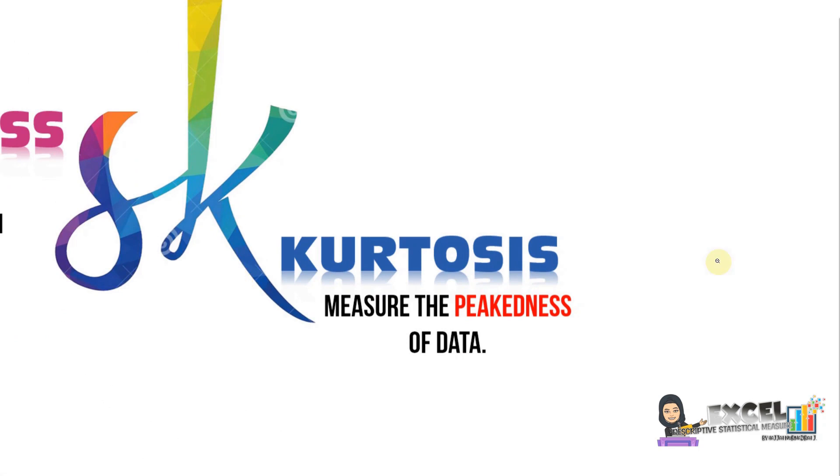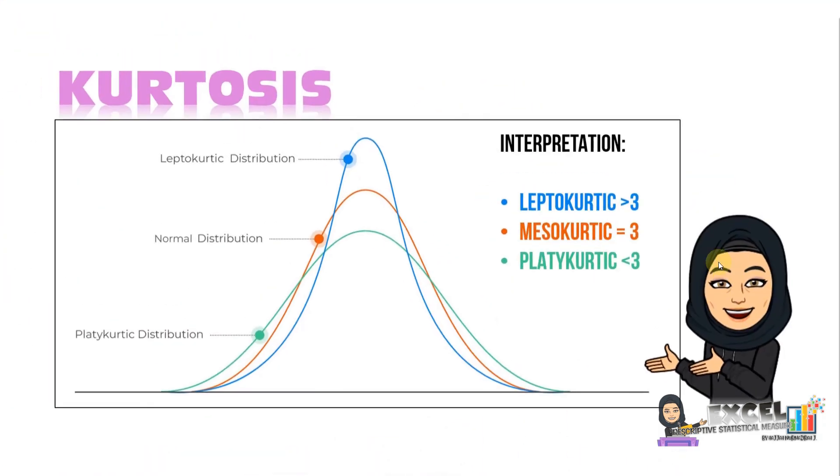For kurtosis, we want to measure the thickness of our data. There are three types or categories: leptokurtic, normal, and platykurtic.